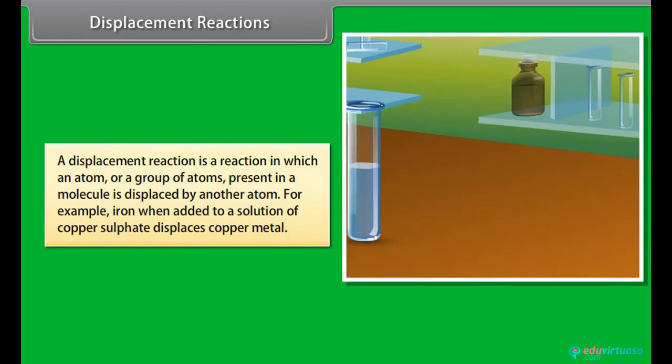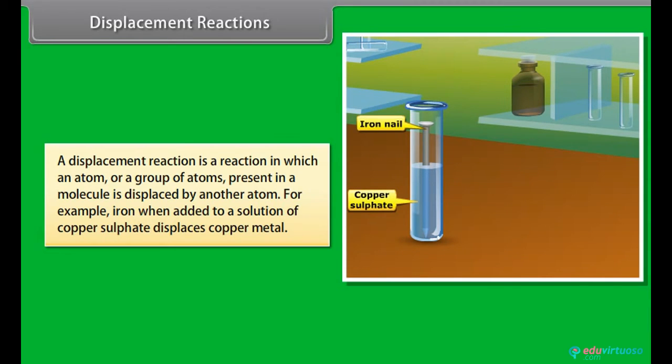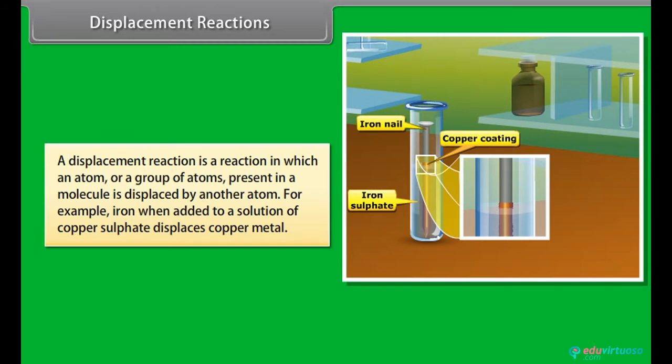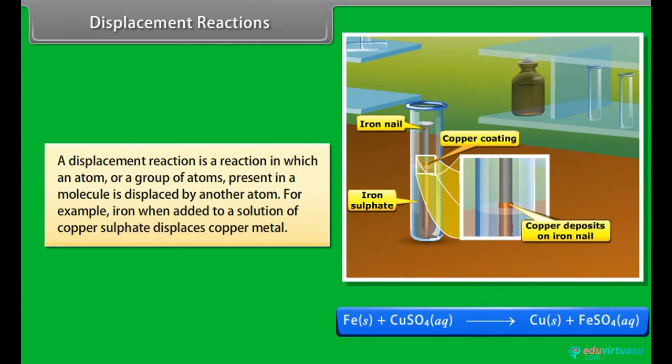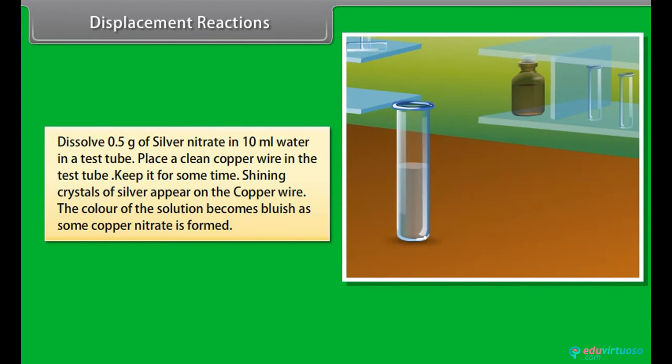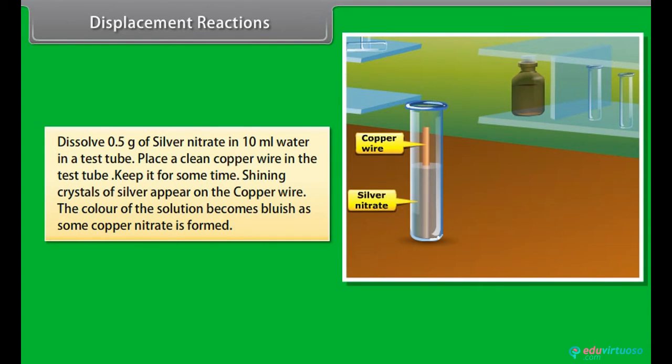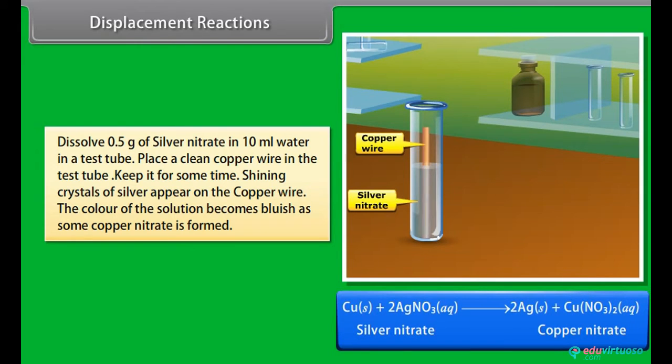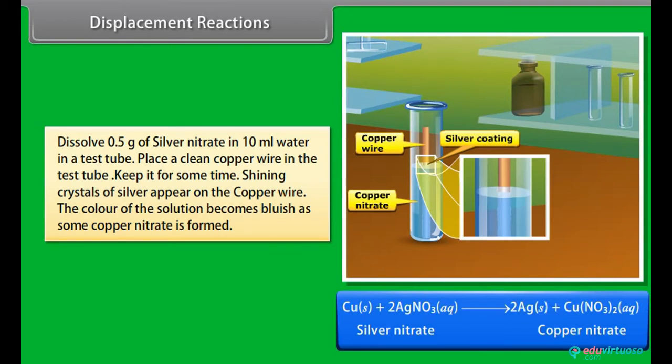Displacement reactions: A displacement reaction is a reaction in which an atom or a group of atoms present in a molecule is displaced by another atom. For example, iron when added to a solution of copper sulphate displaces copper metal. Dissolve 0.5 gram of silver nitrate in 10 ml water in a test tube. Place a clean copper wire in the test tube. Keep it for some time. Shining crystals of silver appear on the copper wire. The colour of the solution becomes bluish as some copper nitrate is formed.